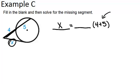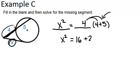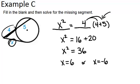So on one side, we're going to have X squared, and then over here, we'll have 4, which is the outside part. Now to solve this, I can distribute the 4 and get 16 plus 20. So X squared equals 36, which means X equals 6 or X equals negative 6. And just like the previous two examples, we will eliminate our negative answer because it doesn't make sense in the context of this problem. So our answer is X equals 6.